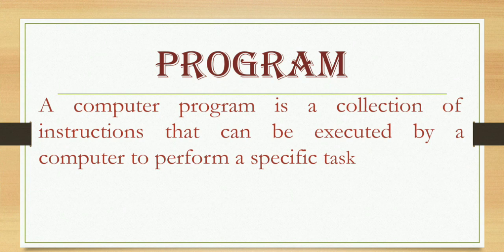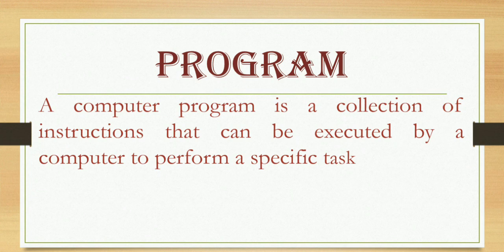In your previous class you may have learned about application software and system software. Software is a set of programs designed for a particular use. An example of system software is an operating system, which is designed for the computer to operate itself. Application software like Paint or MS Word is designed for a particular use — for example, MS Word is used for creating word documents.